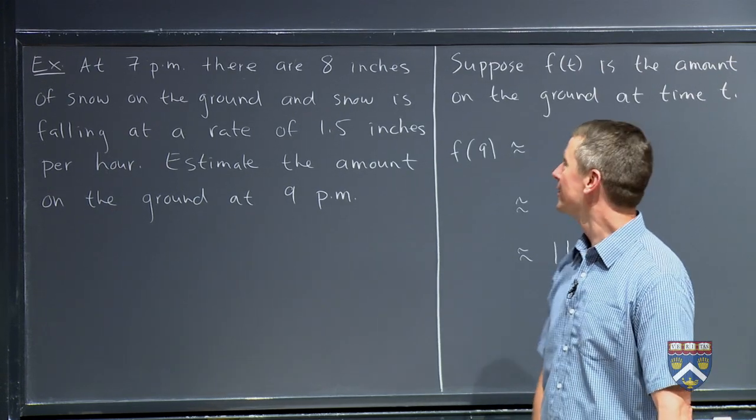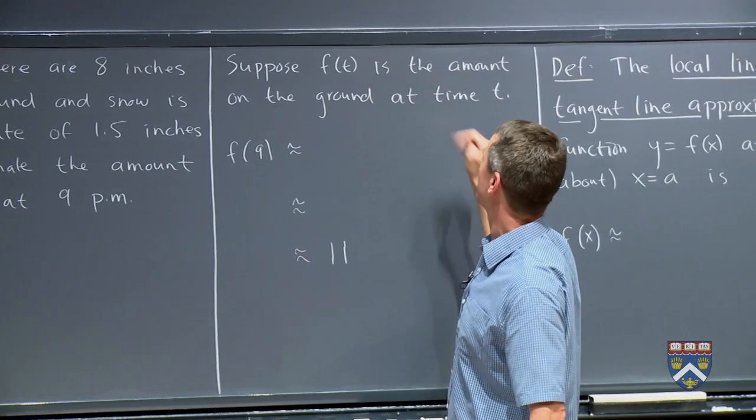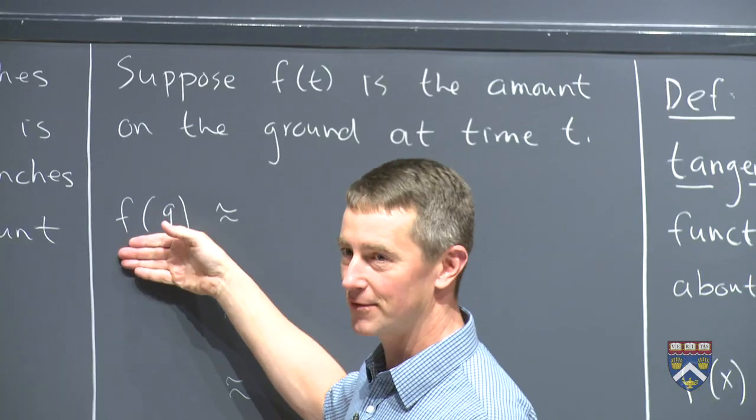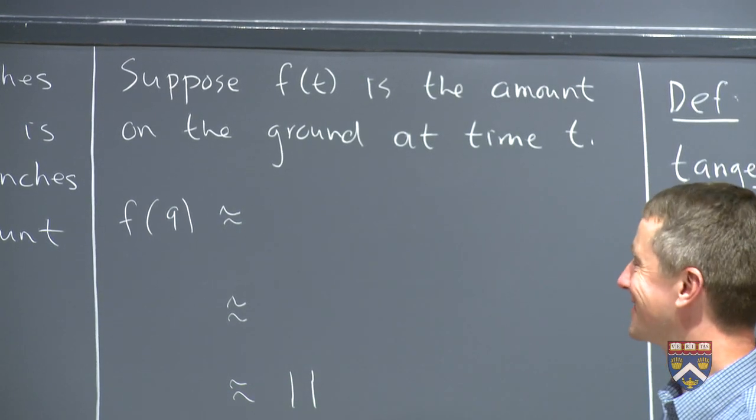Let's try. So let's suppose that I give a name f(t) to the amount of snow on the ground at time t. We're trying to estimate f(9). Did I guess your answer correctly? I hope you got 11.